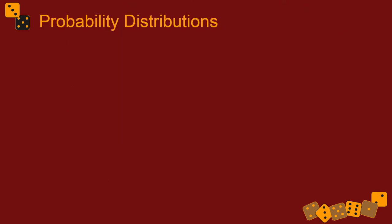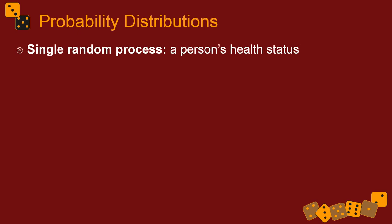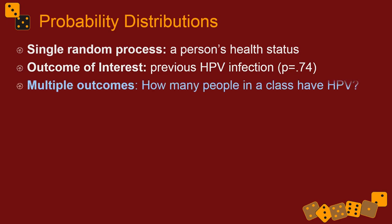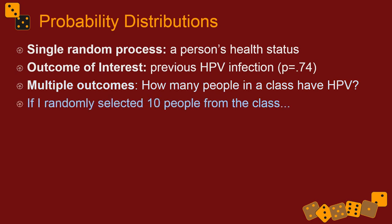Let me show you a few specific examples of how you might use a probability distribution. Let's say a single random process is a person's health status, and the outcome of interest is that the person might have had a previous HPV infection — human papillomavirus. About 74% of the population, from what I was reading on the CDC's website, are estimated to have previously had an HPV infection. So that's a pretty high probability. Now we're interested in the number of people in a class who have a previous infection of HPV.